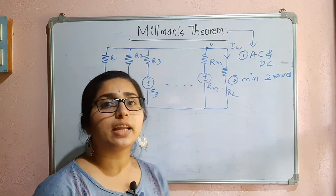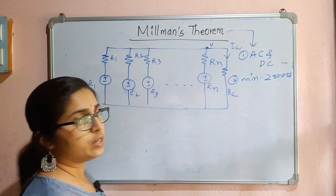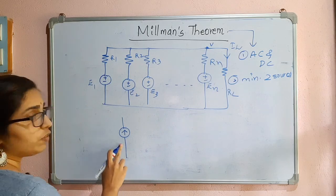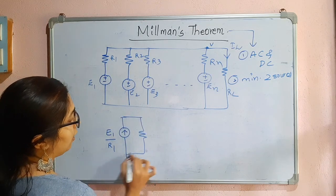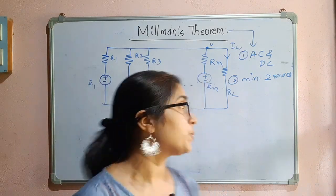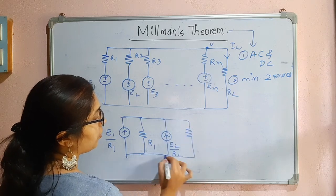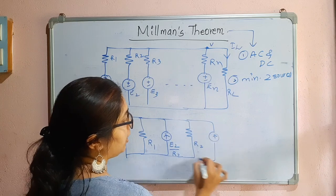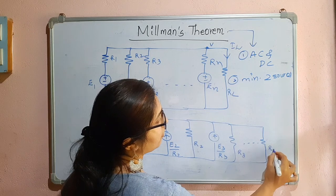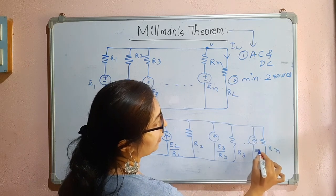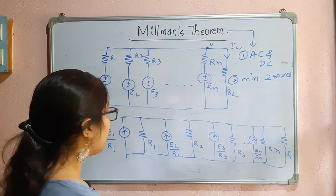The first step is to convert each voltage source to a current source using source transformation. The current value will be voltage divided by resistance — E1/R1, E2/R2, E3/R3, and so on till En/Rn. In source transformation, the resistance value does not change, so each resistance remains in parallel. After conversion, you also have the load resistor connected across all these current sources in parallel.